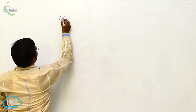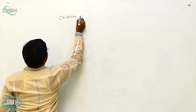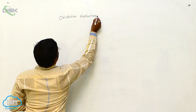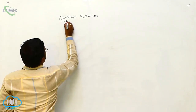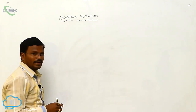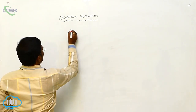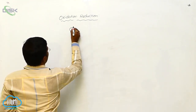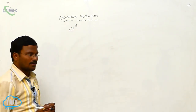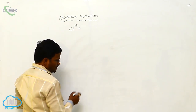Oxidation and reduction: during the extraction of metals from their ores, oxidation and reduction take place simultaneously for the extraction of pure metals or some elements from their ores.